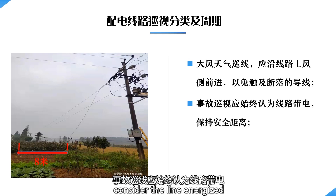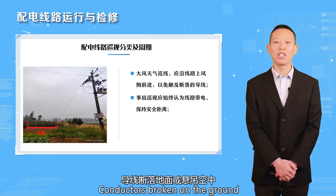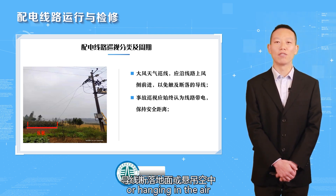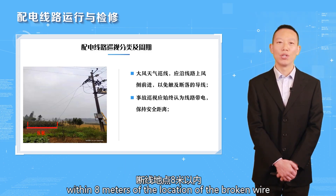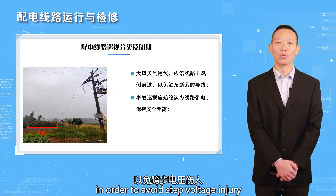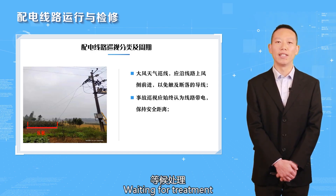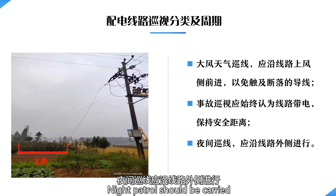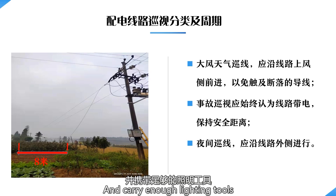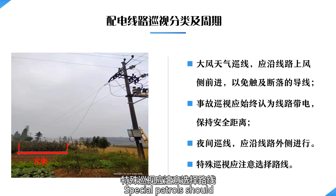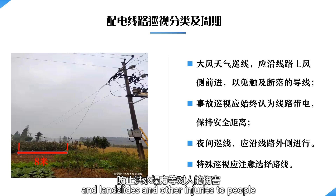Accident patrol should always consider the line as energized and maintain a safe distance. If the inspector finds conductors broken on the ground or hanging in the air, try to prevent pedestrians from approaching within eight meters of the location of the broken wire to avoid step voltage injury, and quickly report to the dispatcher and superior while waiting for treatment. Night patrol should be carried out along the outside of the line with sufficient lighting tools. Special patrol should pay attention to route selection to prevent flooding, landslide, and other injuries to people.